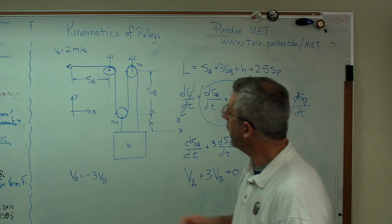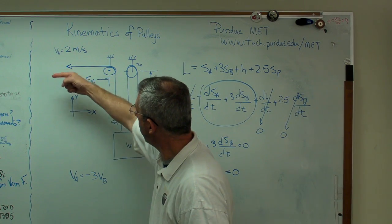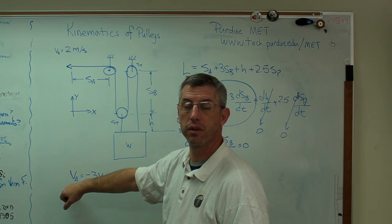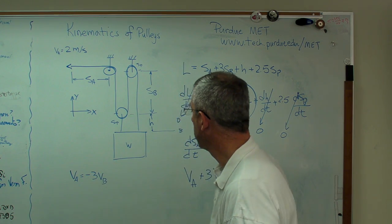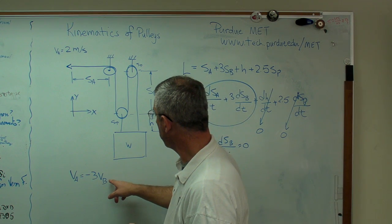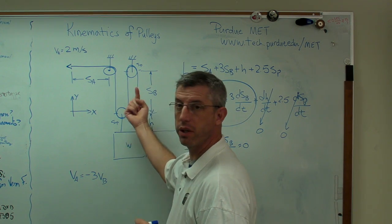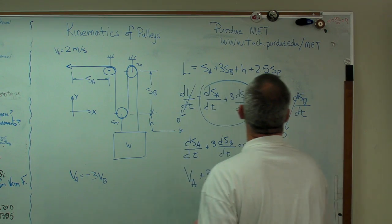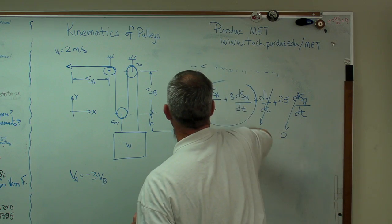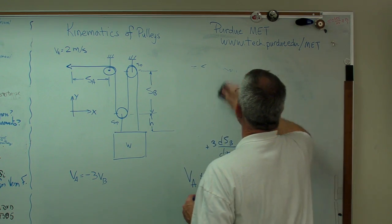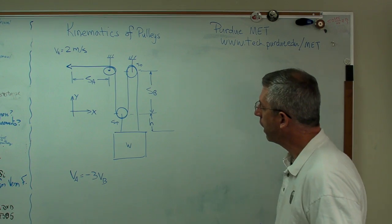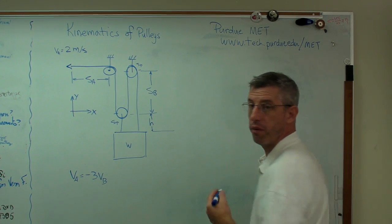So if I am pulling that way in the x direction, that VA is minus 2. So if the result is positive, that means the weight's going up. If the result's negative, that means the weight's going down. Let's solve for VB. We already know what VA is. That was given at the beginning of the problem.